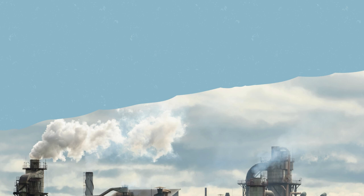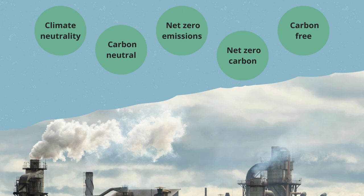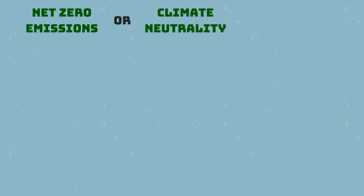In order to understand the first goal, it's important to define what climate neutrality means and what the difference is with other terms like carbon neutral, net zero emissions, net zero carbon, carbon free, and other similar expressions. Net zero emissions, climate neutrality, or net zero greenhouse gases — often shortened as GHG — all mean the same thing.